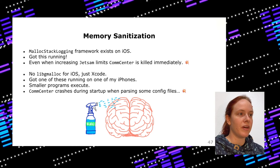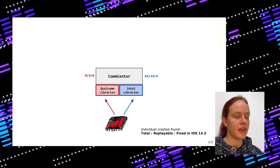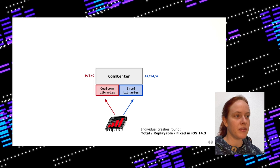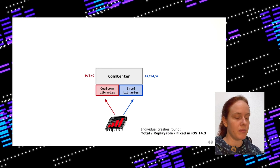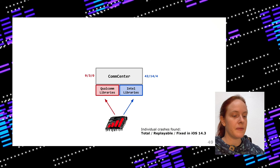Without memory sanitization, the fuzzer cannot find certain bug types or may encounter crashes much later. So all of the fuzzers I created are not perfect, but at least they found a lot of different crashes. The first obvious number is 42 — I stopped fuzzing after 42 crashes, filtering out Frida-induced crashes. Only some of these are replayable by either one or multiple packets, and for replayable crashes I can check if they were fixed in recent iOS versions such as iOS 14.3.